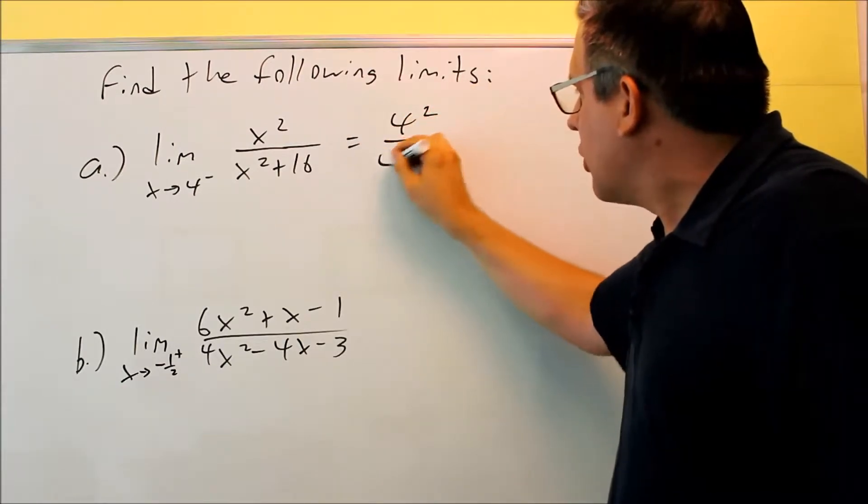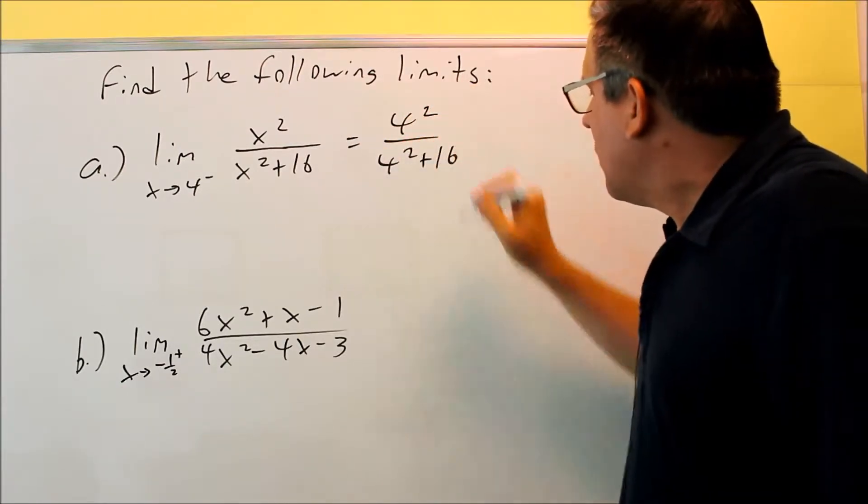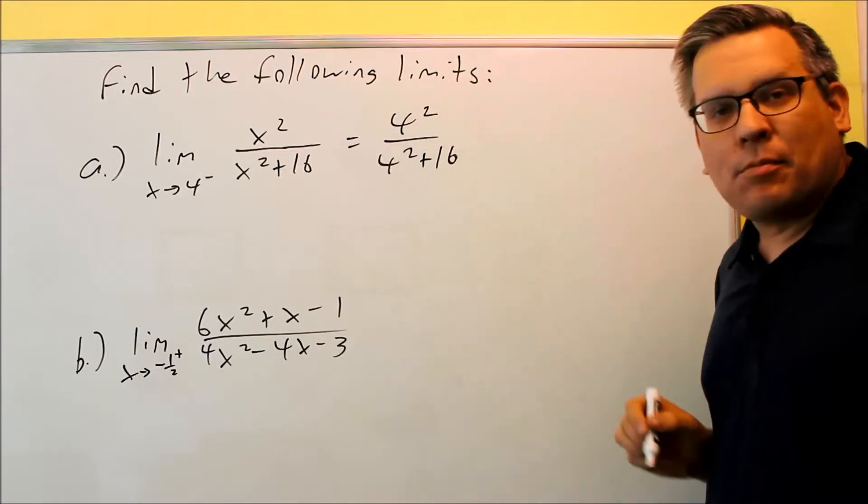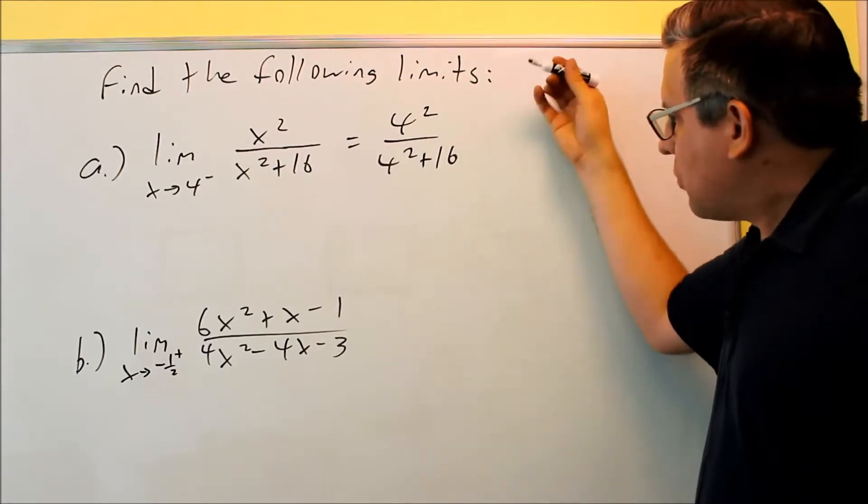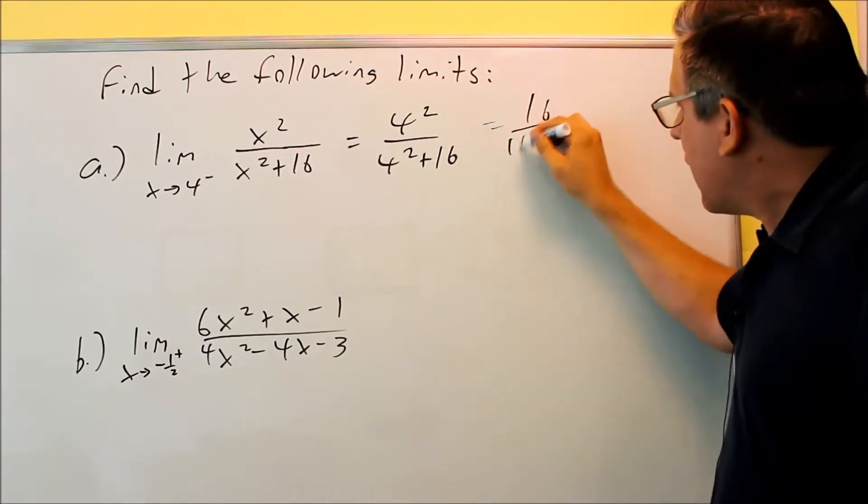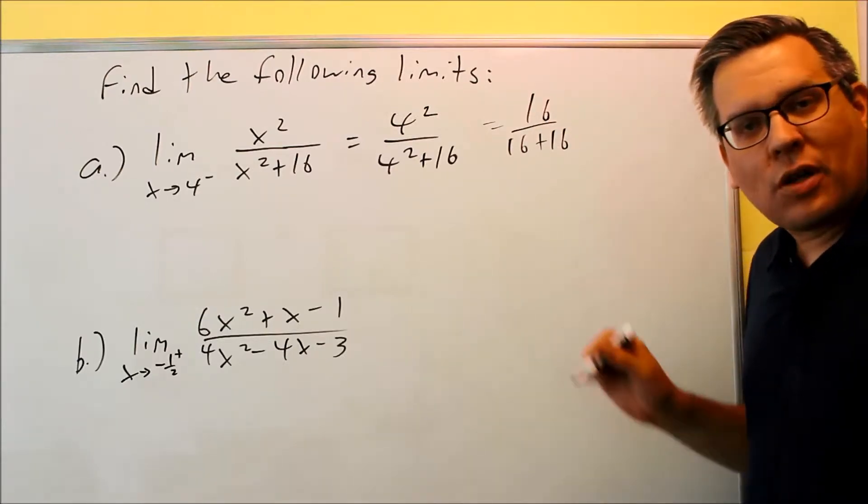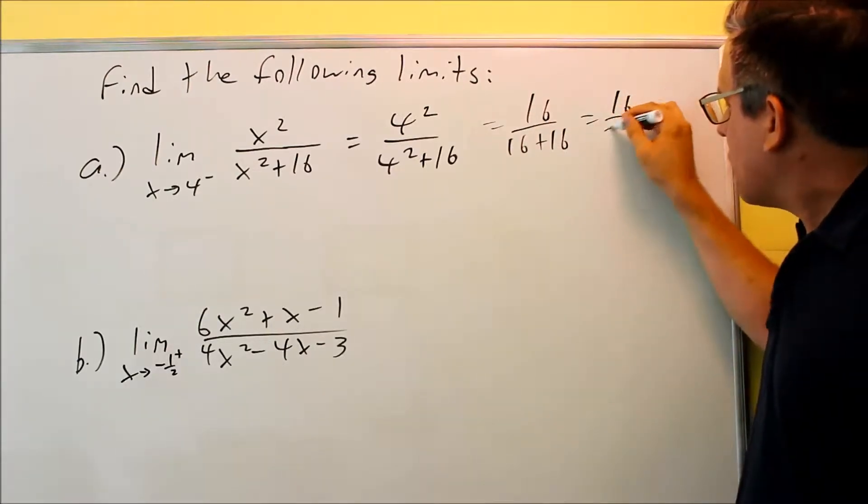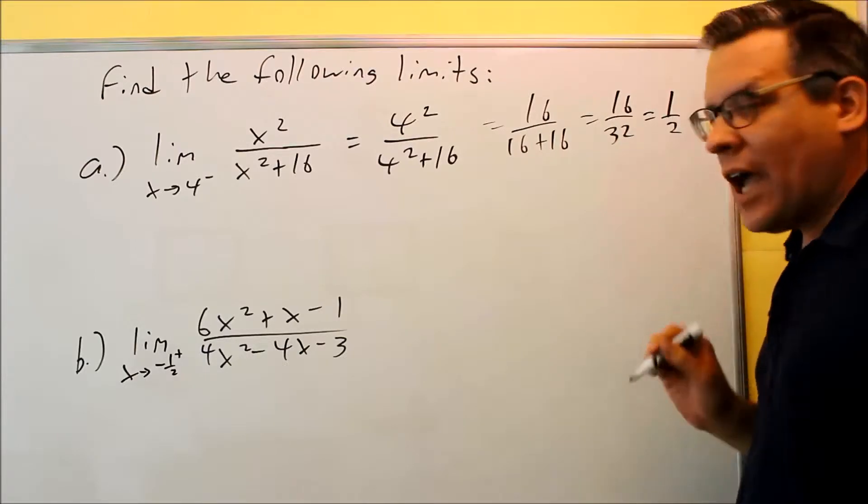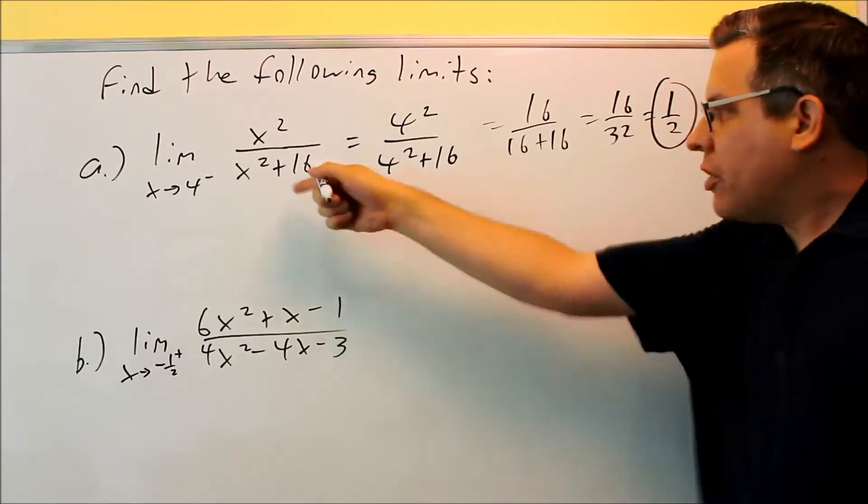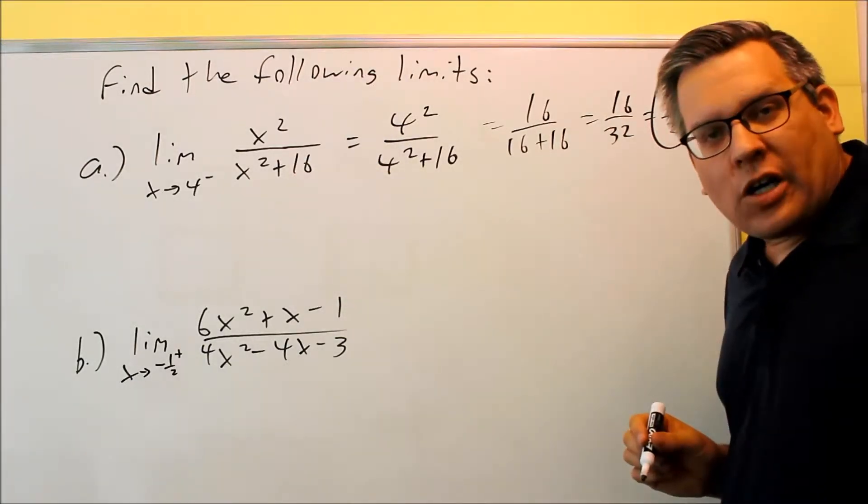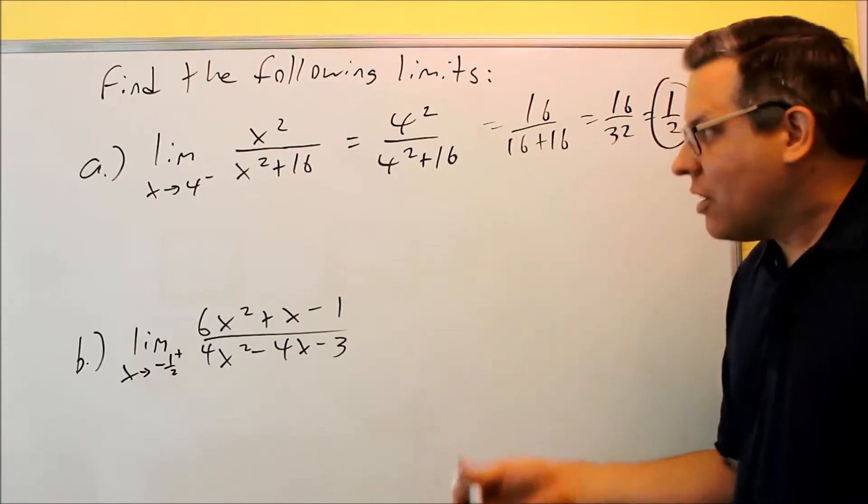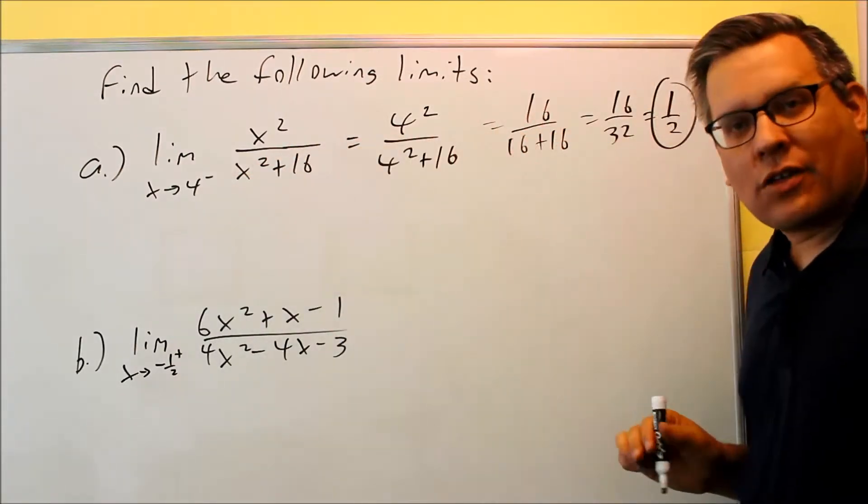So to finish this problem out, we're just going to put in a four in the top and bottom for the x's. I just plug it in directly, and then just work out the answer. So I get 16 over 16 plus 16. That's going to be 16 over 32, which is 1 half. So 1 half would be the answer to part A. Again, no test number needed. I just plugged in four directly and got the answer.